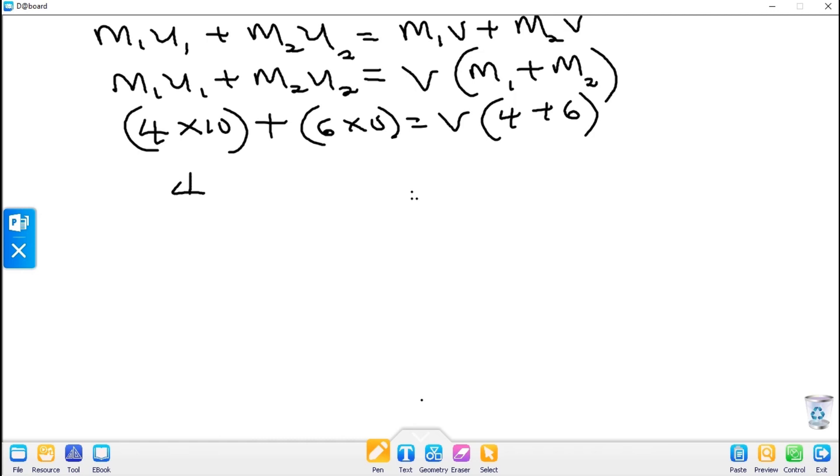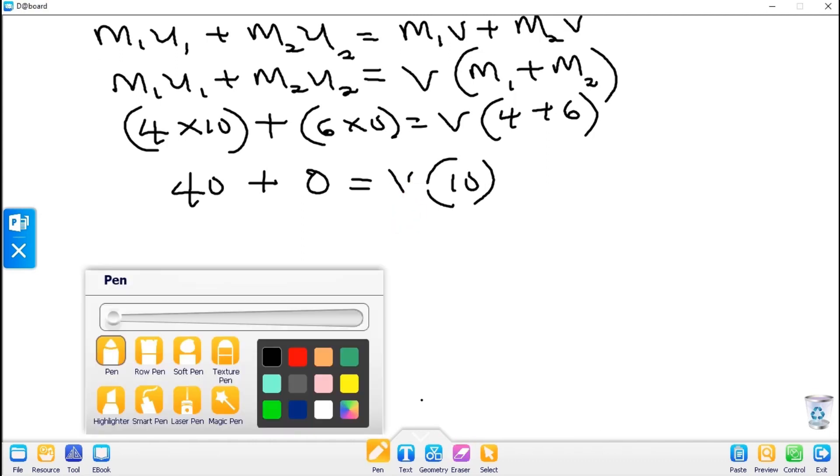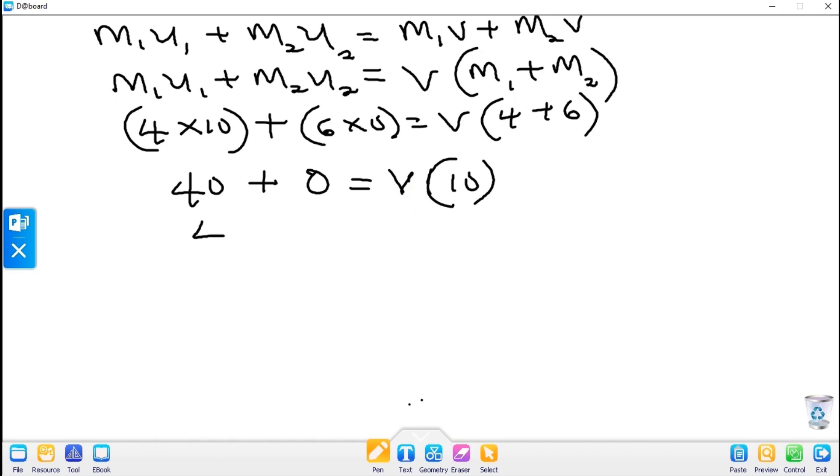So 4 times 10 gives us 40, 6 times 0 is 0, equal to V times 10. So 40 equals 10V. Now I divide both sides by 10, and V becomes 4 meters per second. This is the common velocity after collision.